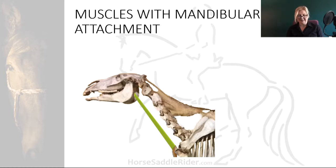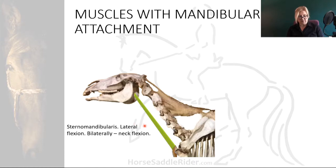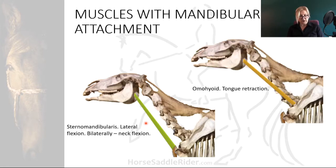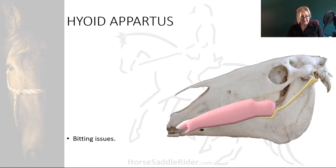Muscles with insertion in the mandibular region from the trunk include sternomandibularis, which laterally flexes the whole cervical region with its origins on the sternum; when acting together they ventrally flex the neck. And omohyoid, which originates from the fascia of the scapular muscles to insert in the hyoid apparatus of the throat region. The hyoid apparatus is suspended in the soft tissue of the throat region from the base of the cranium.